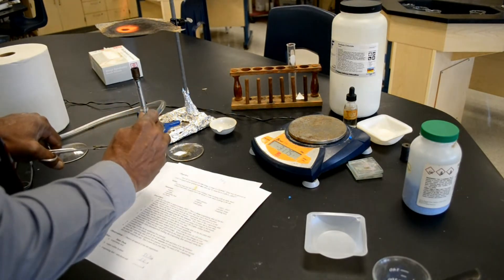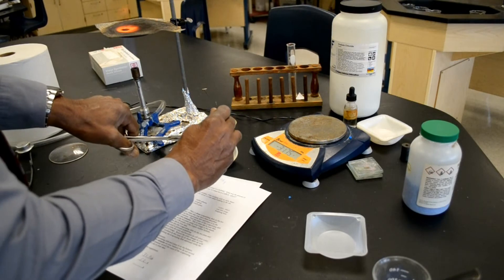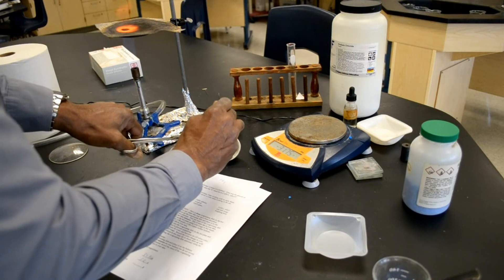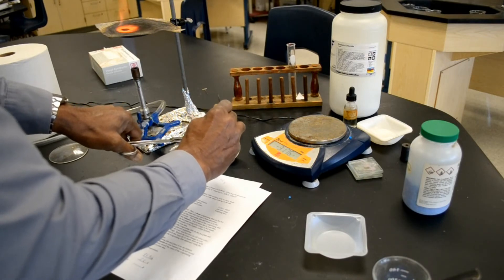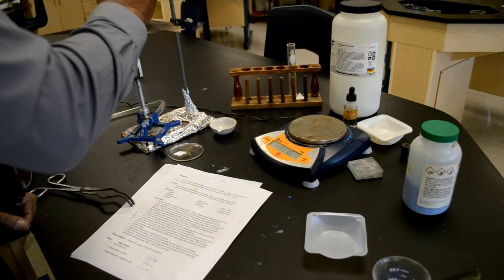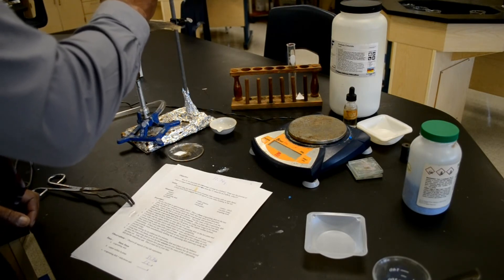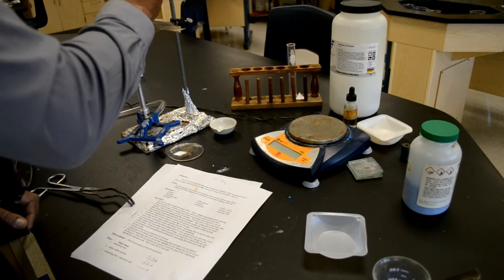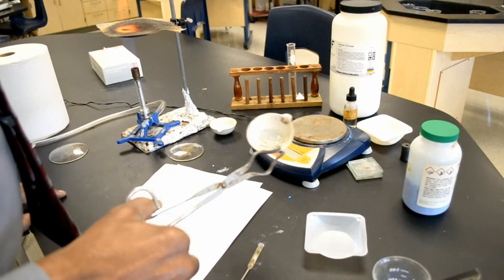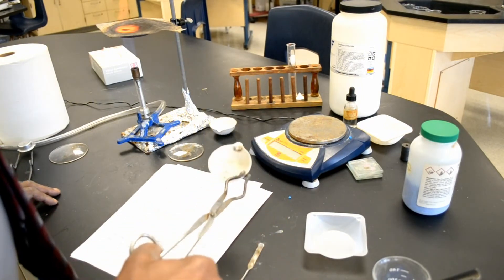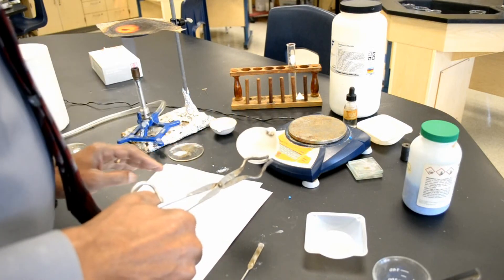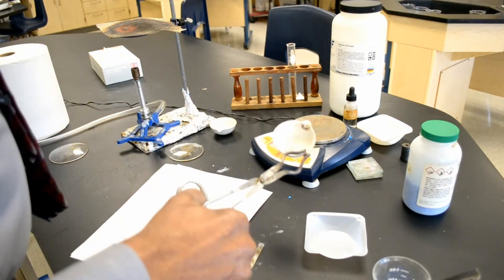You can see it's turning really white now. But all the hydrate is not broken up yet. I've got to continue to break this up. I'm going to continue to heat this. As you can see, the entire sample is an off-white color. Might as well turn the Bunsen burner off.